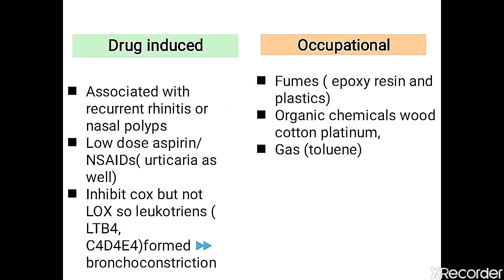Drug-induced asthma, like aspirin, is associated with recurrent rhinitis and nasal polyps. Low-dose aspirin and NSAIDs can trigger it; the association with NSAIDs is called urticaria. Aspirin works on the pathway leading to prostaglandin formation, and there is also the LOX pathway that leads to leukotriene formation.